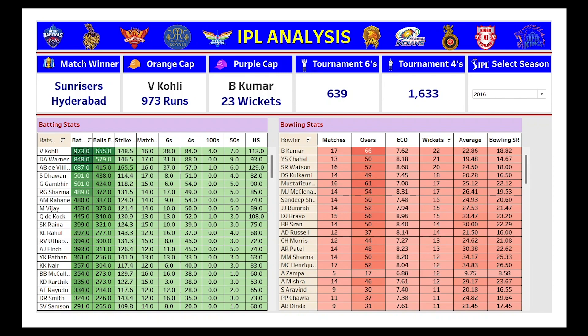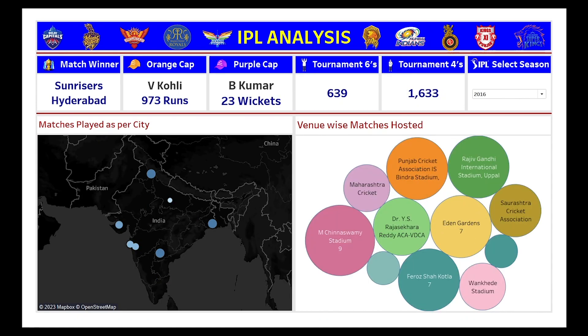Similarly, for the bowling stats — for that particular bowler in that particular season — we have matches played, overs bowled, economy, wickets taken, average, and bowling strike rate. For both of these charts, we have used a high level of complex calculated fields using LOD functionalities.